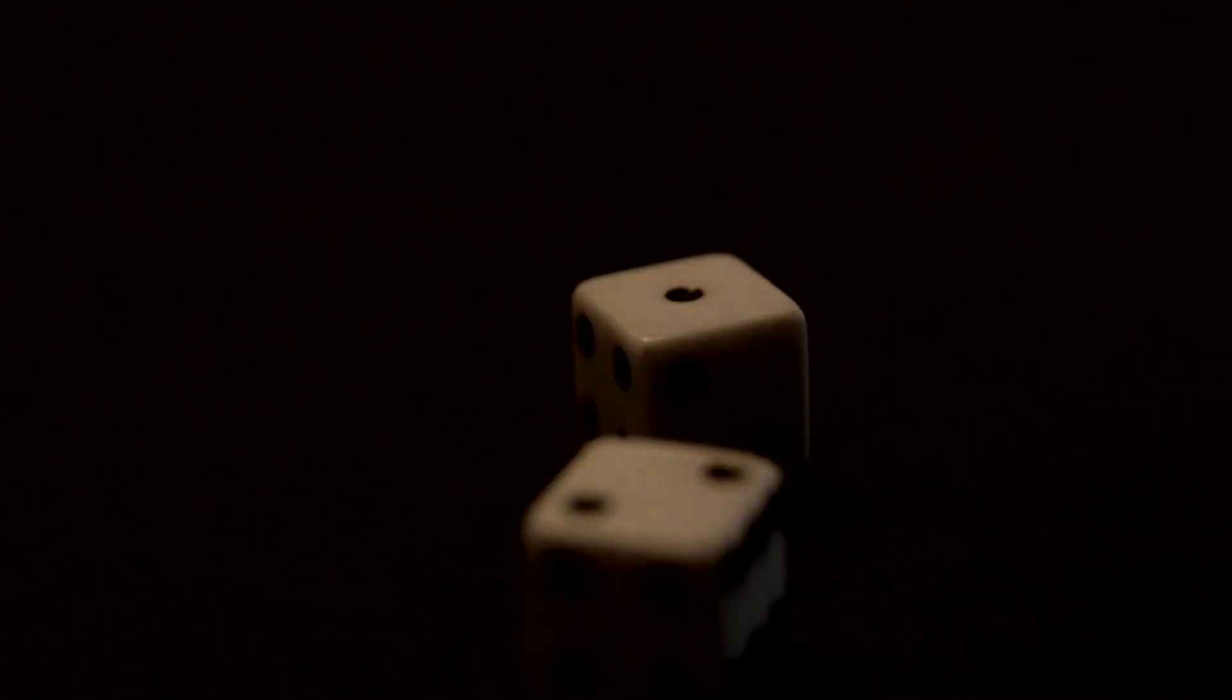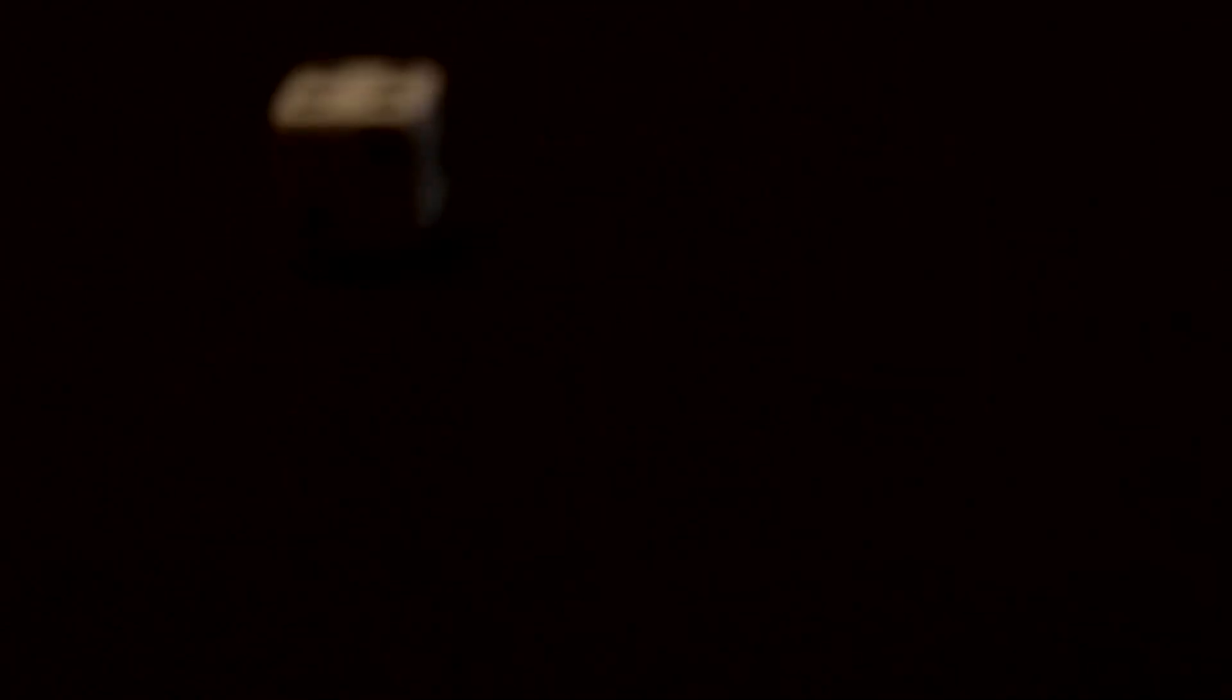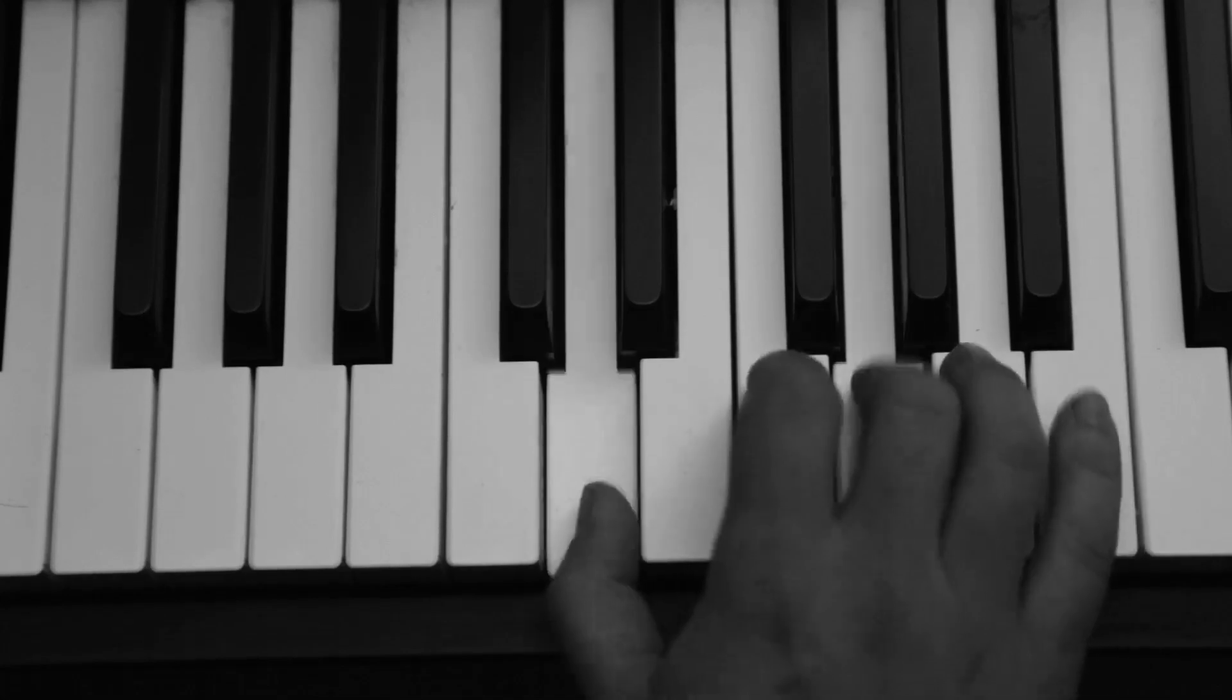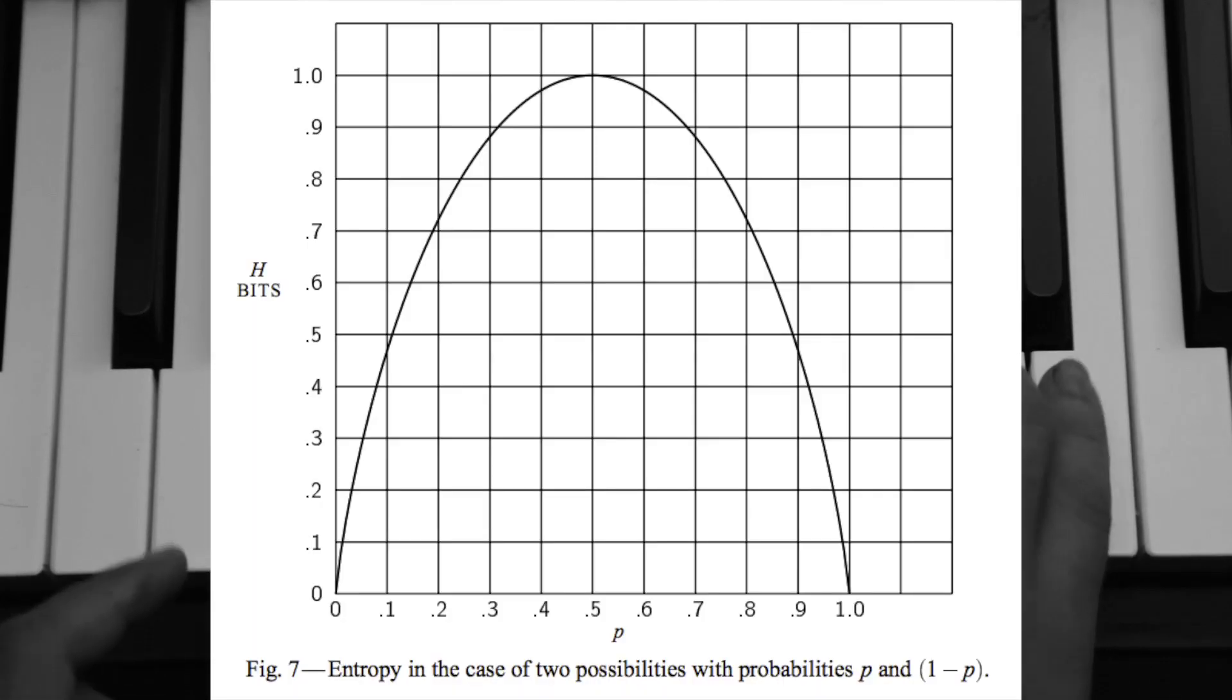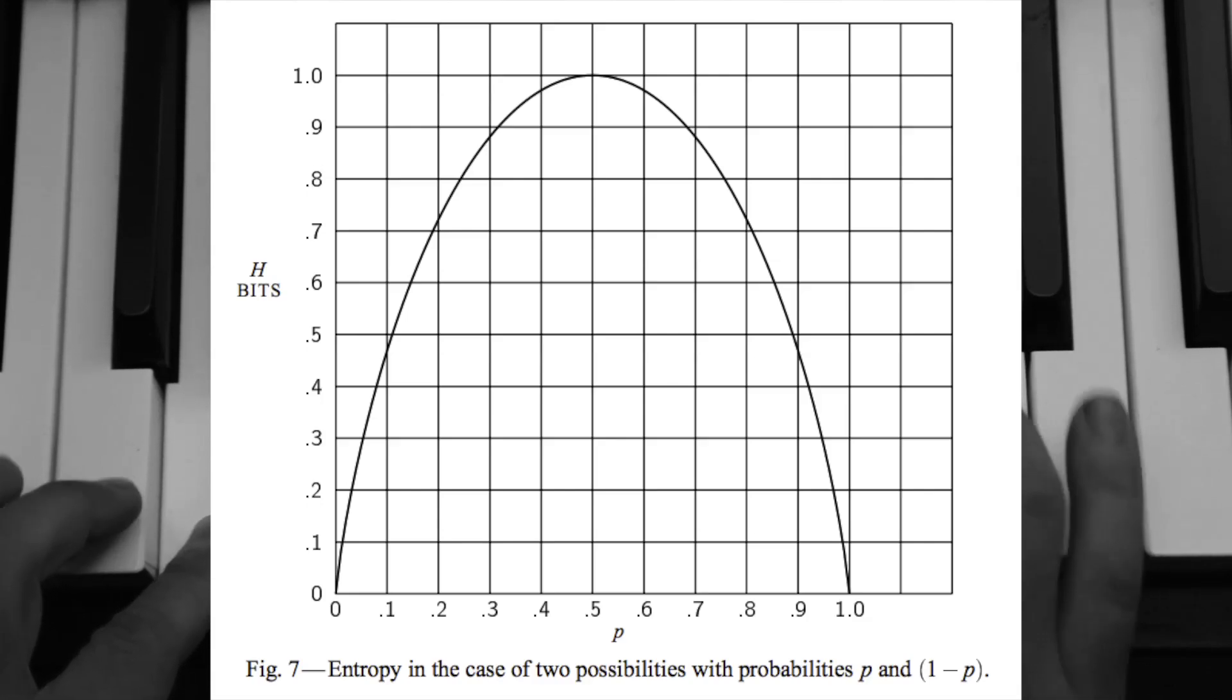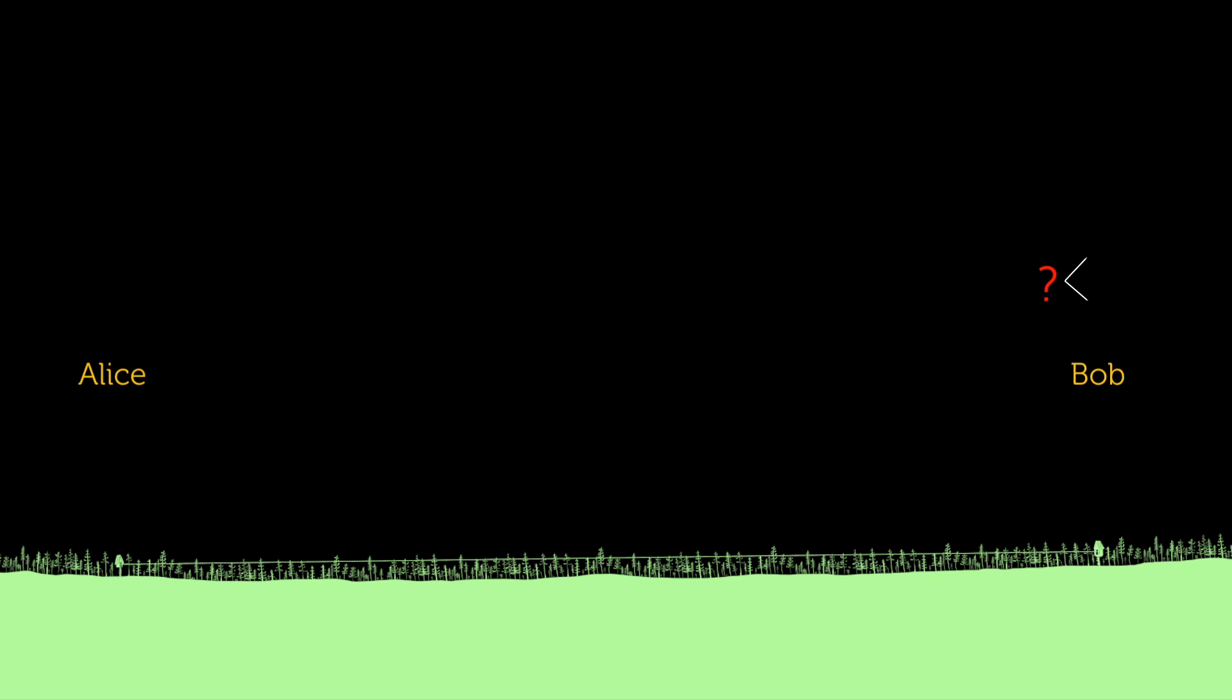Entropy is maximum when all outcomes are equally likely. Any time you move away from equally likely outcomes or introduce predictability, the entropy must go down. Now, the fundamental idea is that if the entropy of an information source drops, that means we can ask fewer questions to guess the outcome.